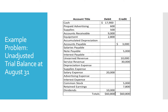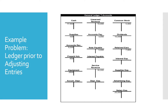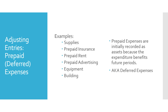We're going back to our problem that we were working through in Module 1 and we have our unadjusted trial balance here that we prepared at the end of Module 1. And here are our ledger account balances which are reflected in that unadjusted trial balance. We're going to focus now on adjusting entries for prepaid, also known as deferred, expenses.